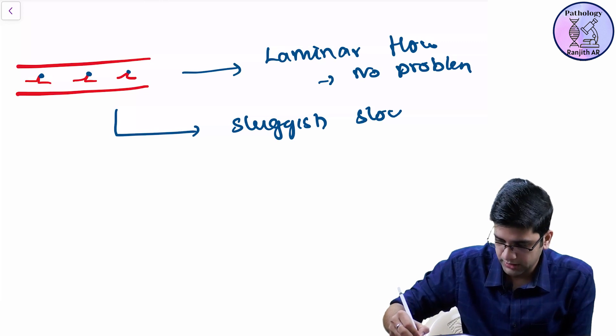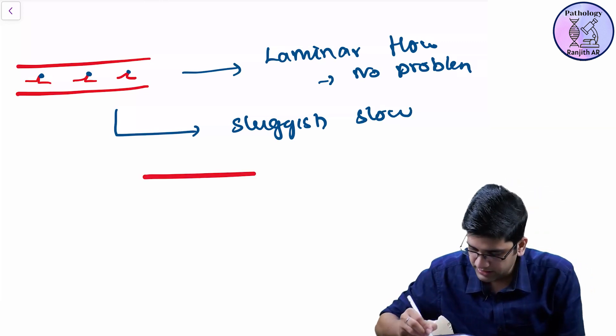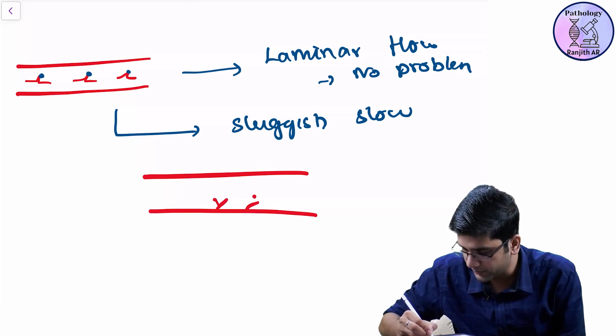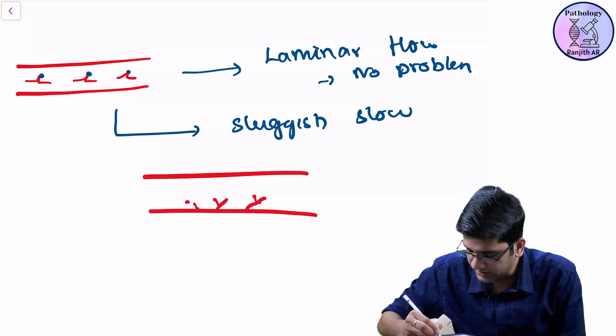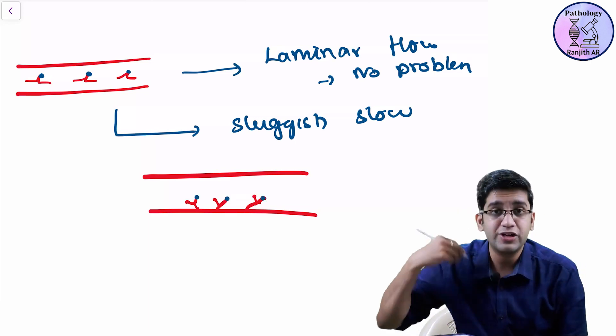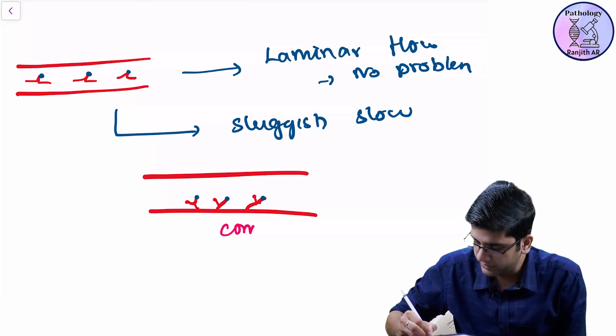But when they have a sluggish flow, the flow becomes slow. So what happens is my same thing, my immune complex will get deposited here. Now immune complex kind of gets deposited here. Once they're going to get deposited here, they're going to trigger an inflammatory response.